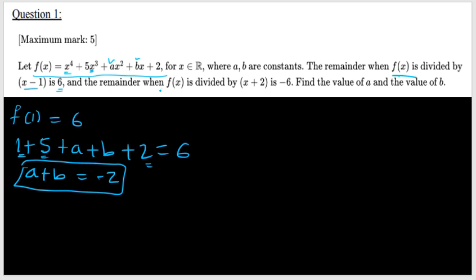And the other precondition, when f(x) is divided by x plus 2, the remainder is negative 6. That means f(negative 2) is equal to negative 6. So we need to plug negative 2 in place of every x. So when I plug negative 2 in place of x here, it's going to be 16.